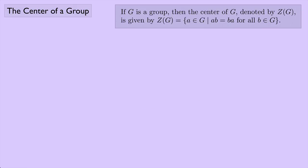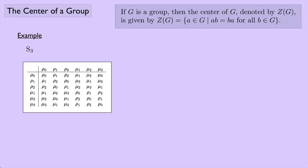Here's our definition of the center of a group. Now let's look at the group S3 — that's the group of symmetries on an equilateral triangle. Here is the group table for S3, and we're going to try and find the center of S3. It's pretty clear that the identity element, which in this case is rho naught, is going to be in the center. So we can say for sure we're definitely going to have rho zero.